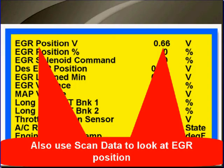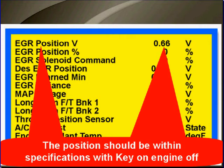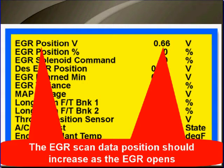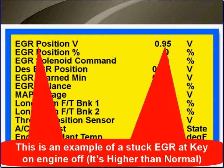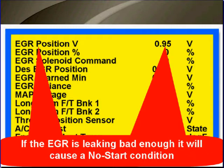You can also use scan data to look at the EGR position. It should be within specifications with the key on and engine off. The EGR scan data position should increase as the EGR opens. In this example of a stuck EGR at key on and engine off, it's higher than normal, telling us that we have an EGR stuck open. If the EGR is leaking bad enough, it can cause a no-start condition.